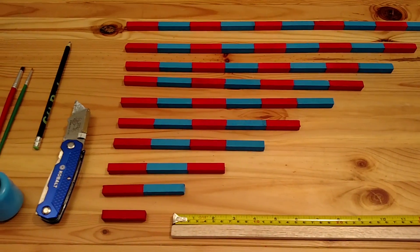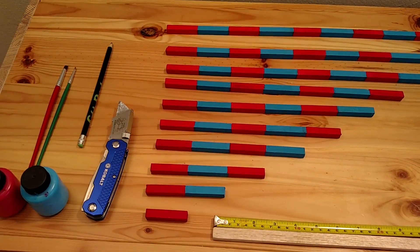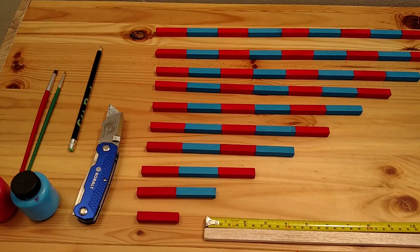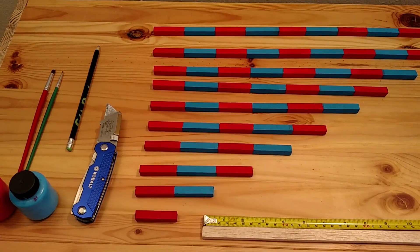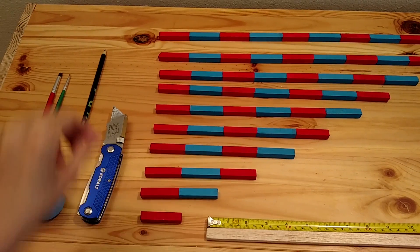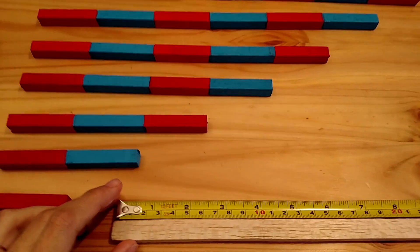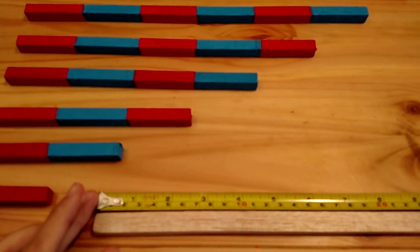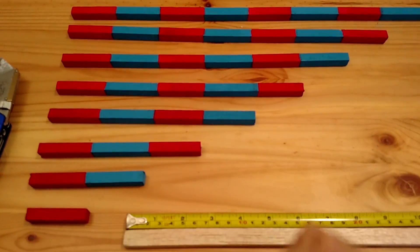Once you have your bousel wood sticks, you want to get about four bousel wood sticks that are about three feet, maybe one extra just in case you make any mistakes. Then you want to lay out the measuring tape and measure. I made my bousel wood stick sections two inches.